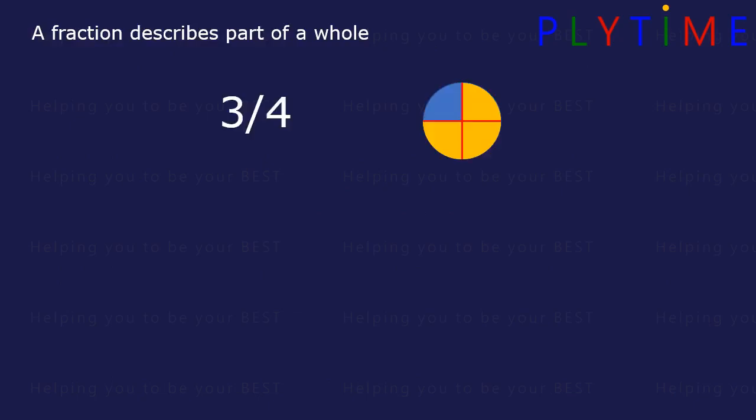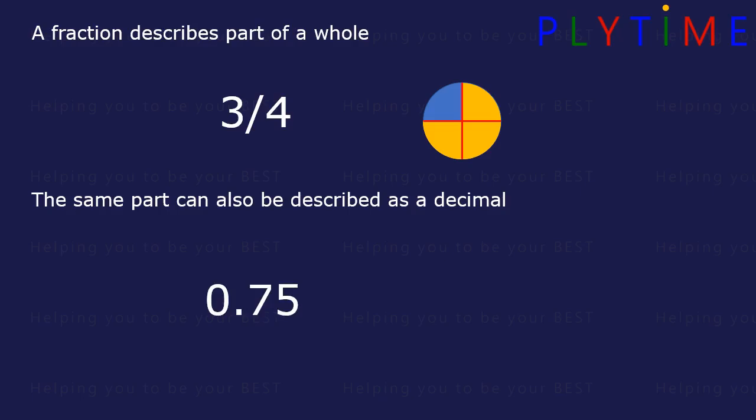If we look at a circle, the yellow part is 3 quarters. The same part can also be described as a decimal, 0.75. It's 75 parts out of 100. If the whole circle was 100, then the yellow section is 0, 25, 50, 75. 75 parts out of 100.